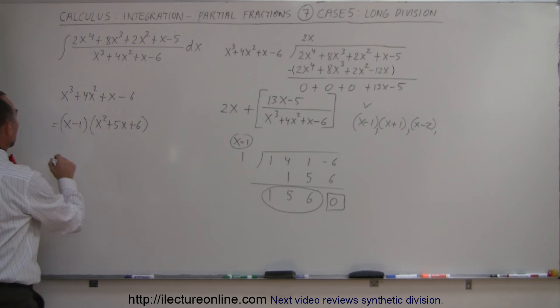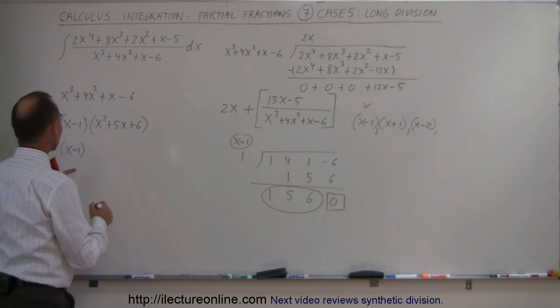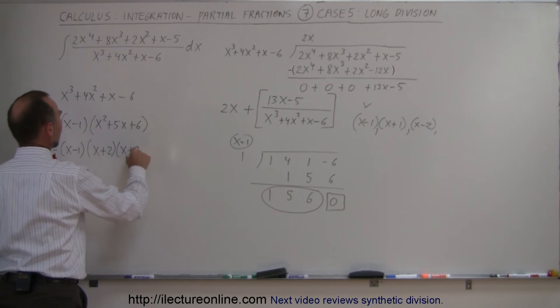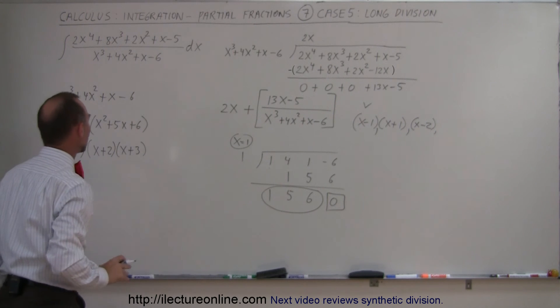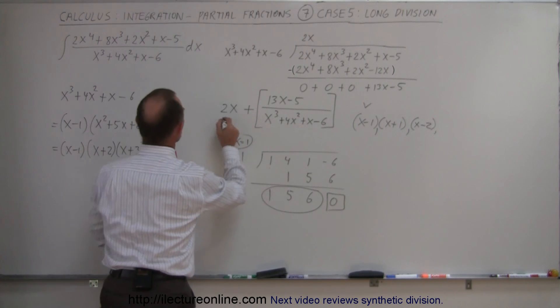And the answer is yes. We can write this as x minus 1 times x plus 2 times x plus 3. Because when you add them together, you get 5. When you multiply, you get 6. So there's the denominator in factored form, which means you can now write this equation right here.